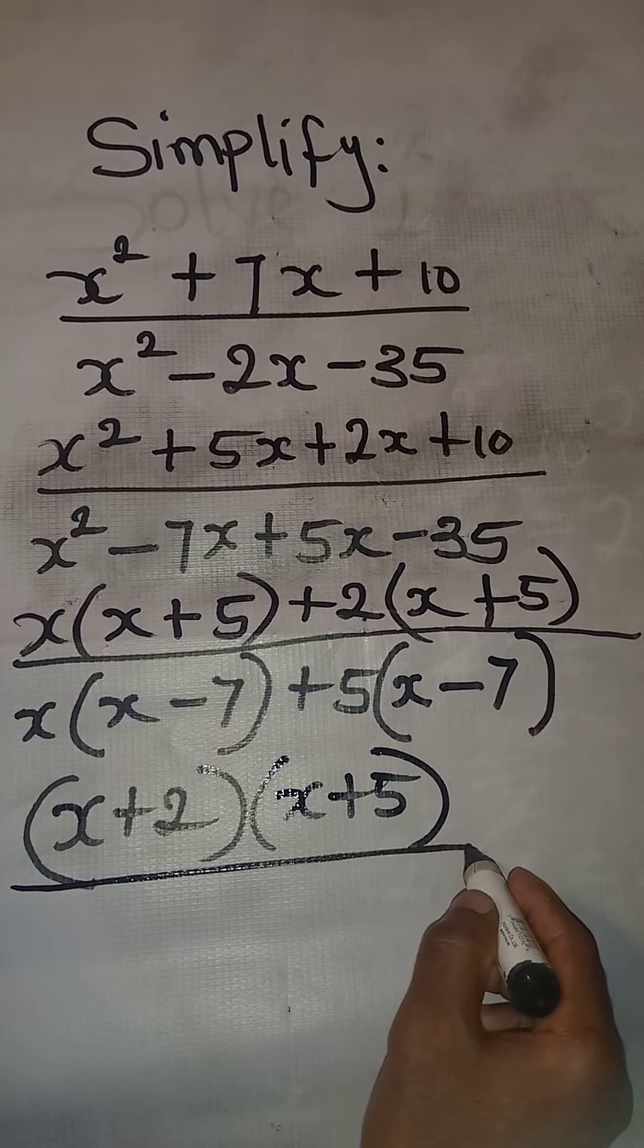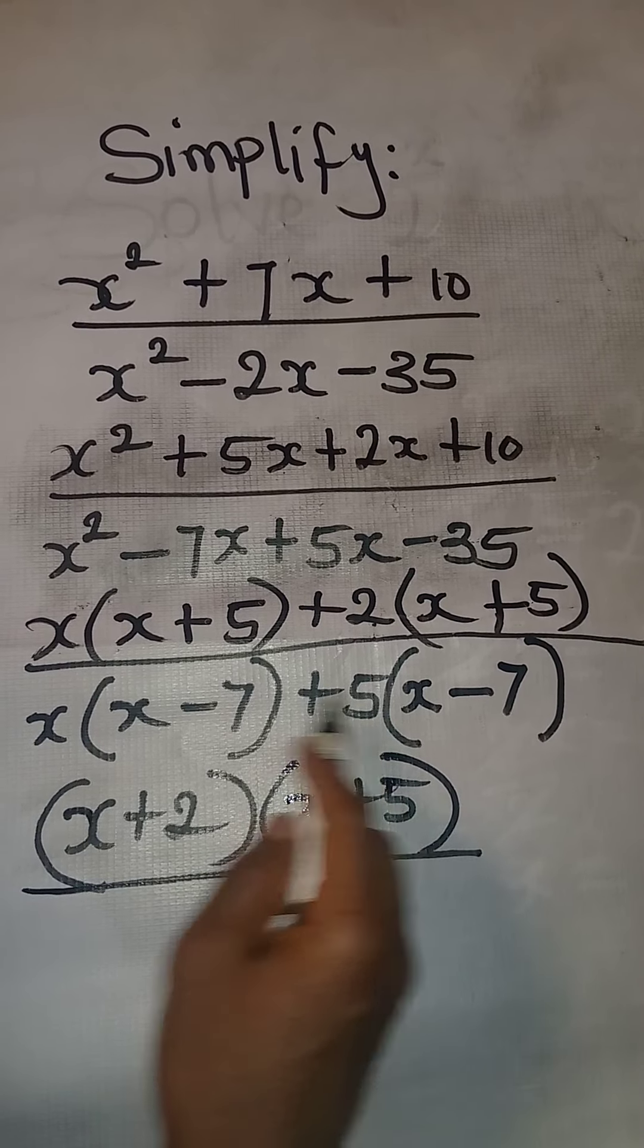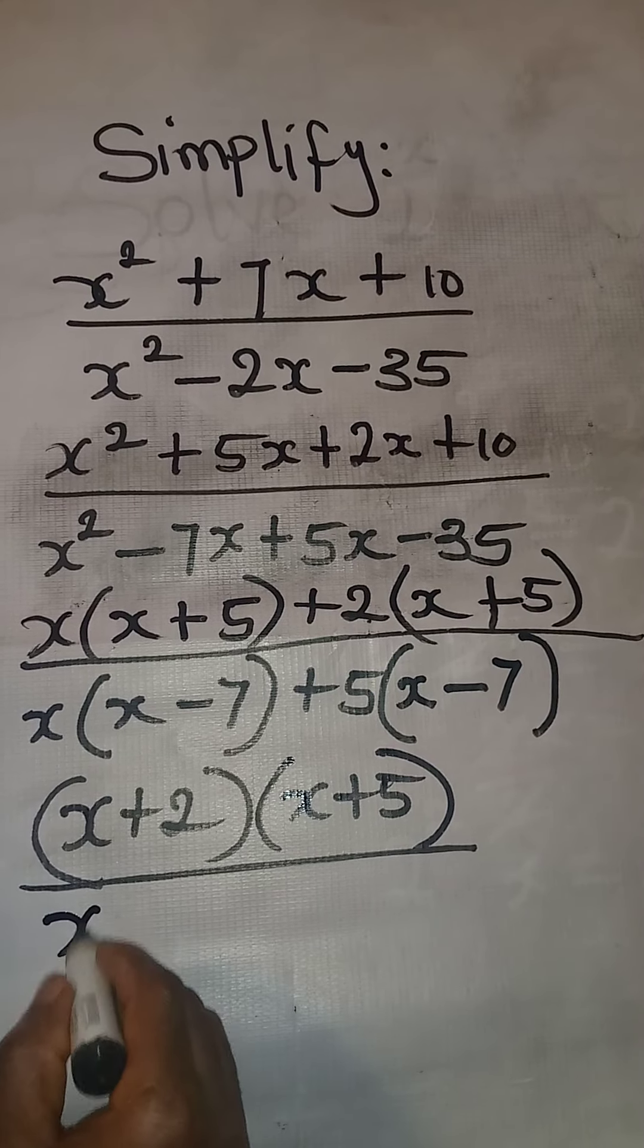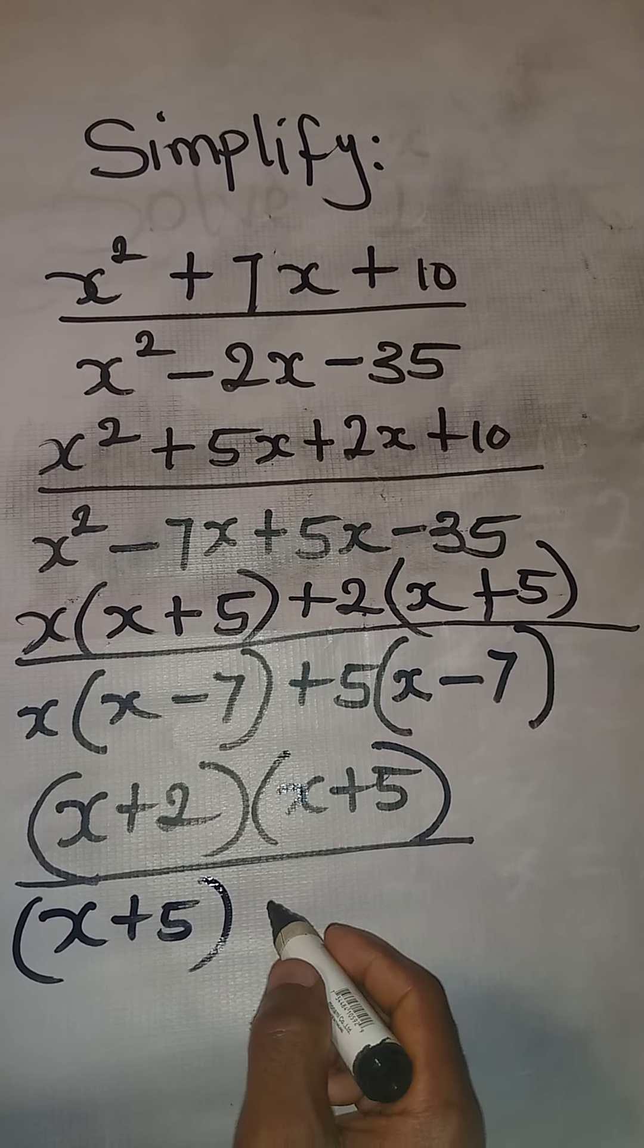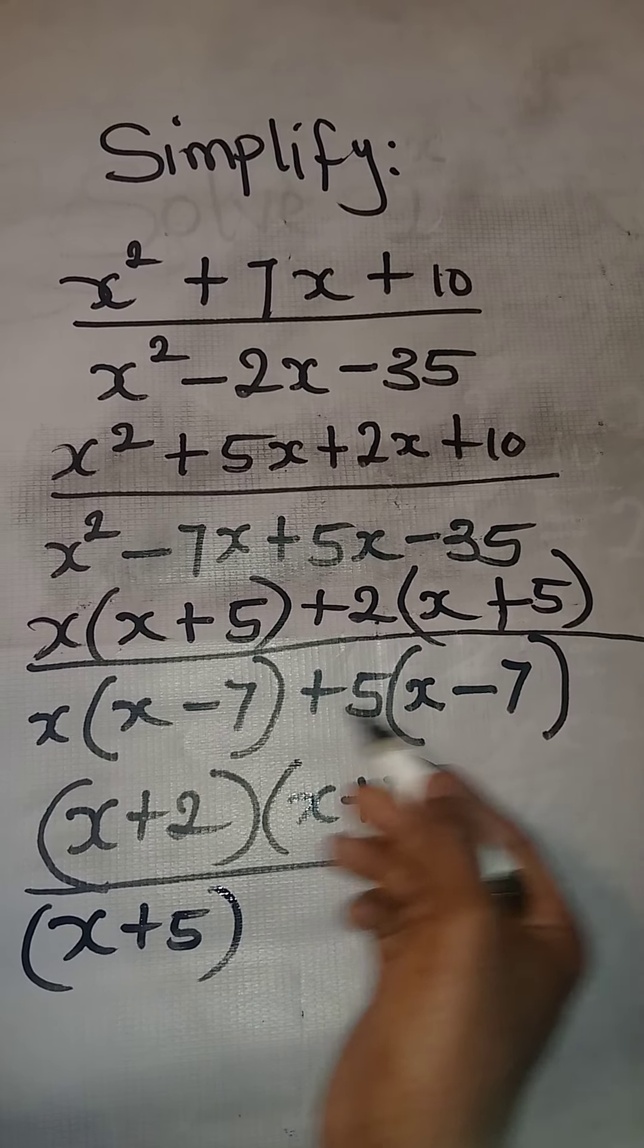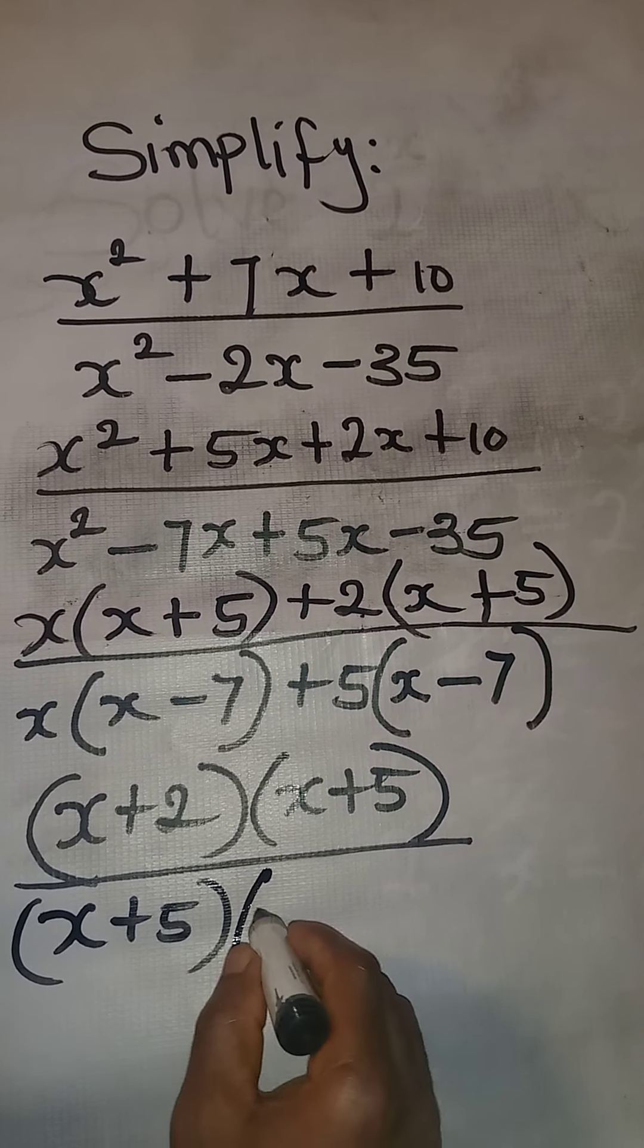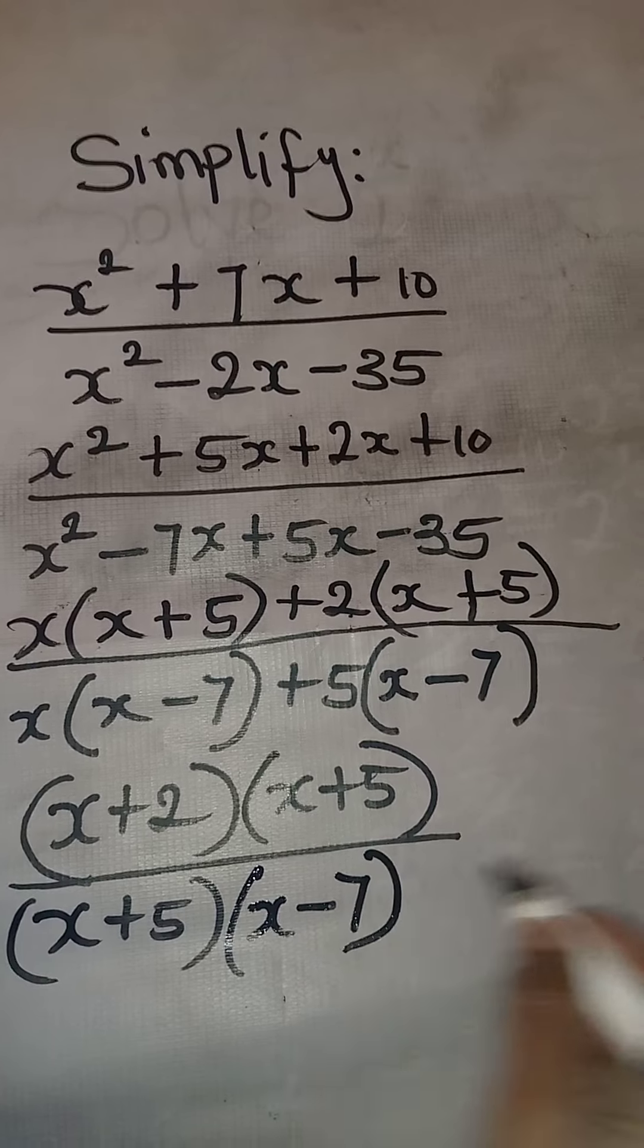For the denominator, we are going to pick the terms outside the brackets. And that will be x and 5. So we have x plus 5. Then we are going to pick one of the terms in the brackets. And then we have x minus 7.